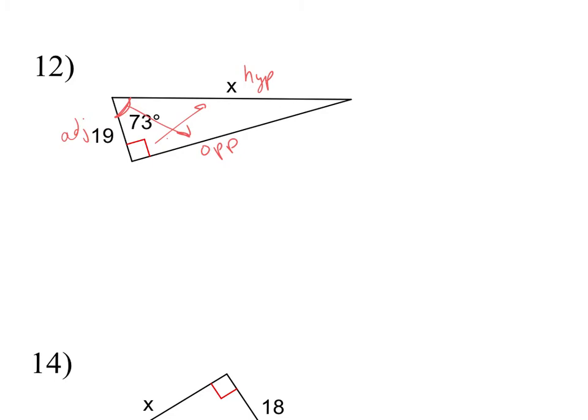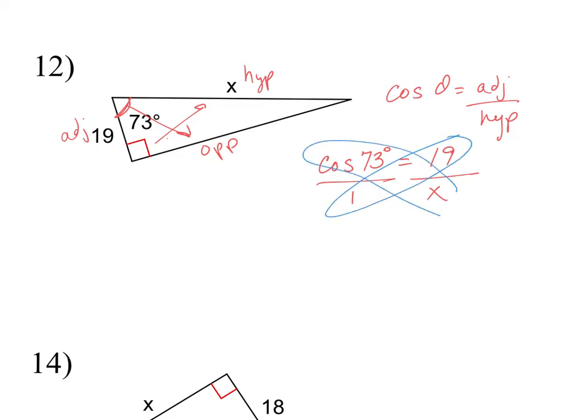So I have a value for the adjacent side, and I'm looking for the hypotenuse. So based on my acronym SOHCAHTOA, I'm going to be using the cosine function. When I fill in my information, I'm going to have the cosine of 73 degrees equals the adjacent side, which is 19. And I'm solving for the hypotenuse, which is represented by x. Now, we're still going to cross-multiply to solve for x, because I still have a proportion by putting the cosine of 73 over 1. But this time, you'll notice that I'm going to do 19 times 1 equals 19.